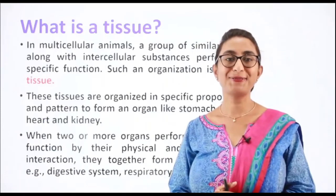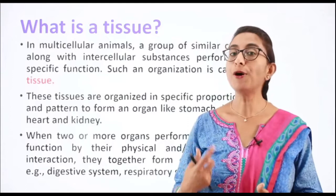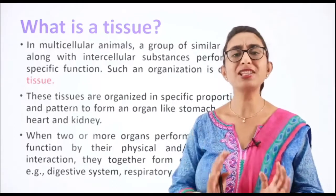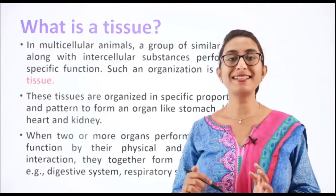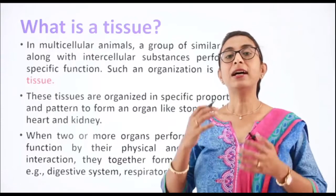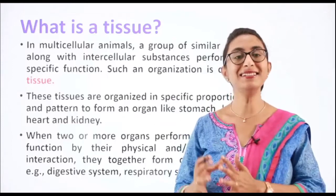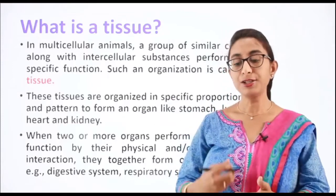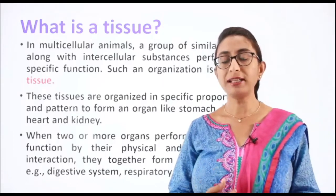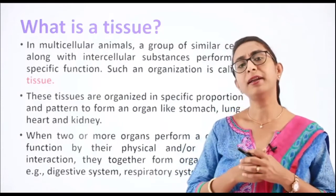In multicellular organisms, a group of similar cells along with intercellular substances performs specific functions - these are called a tissue. Tissues are organized in specific proportion and pattern to form an organ like the stomach, lung, or kidney.